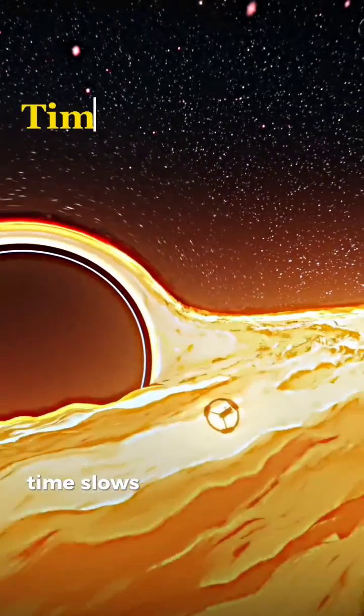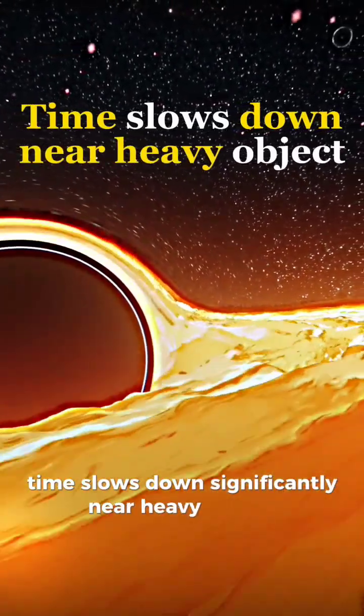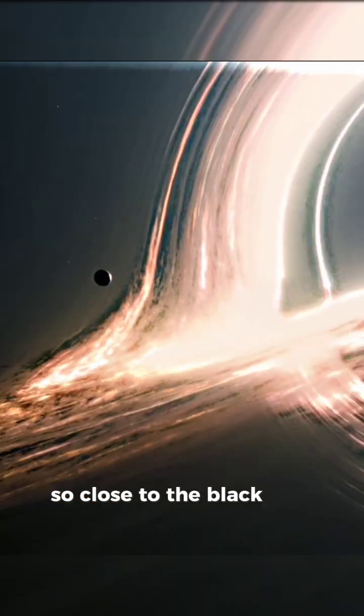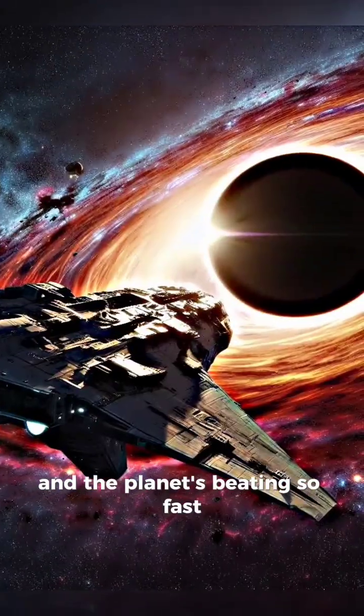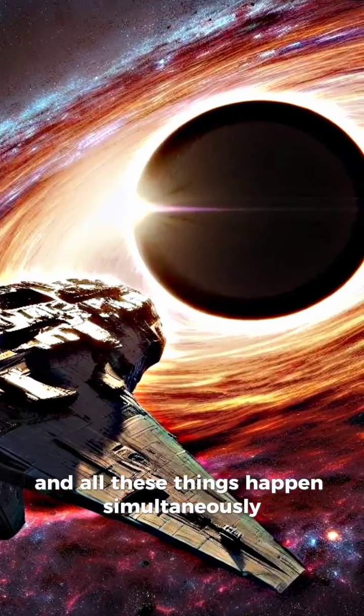pointed out, time slows down significantly near heavy objects such as black holes. Therefore, Miller's planet being so close to the black hole, the black hole's high gravity, and the planet orbiting so fast—all these things happen simultaneously, making